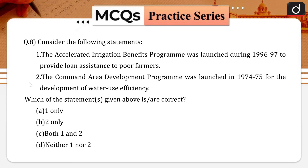Next question: consider the following statements. First, the Accelerated Irrigation Benefits Program was launched during 1996-97 to provide loan assistance to poor farmers.